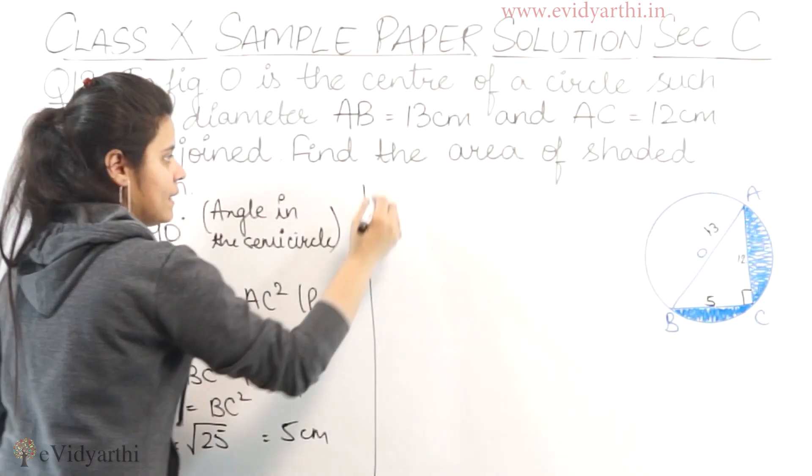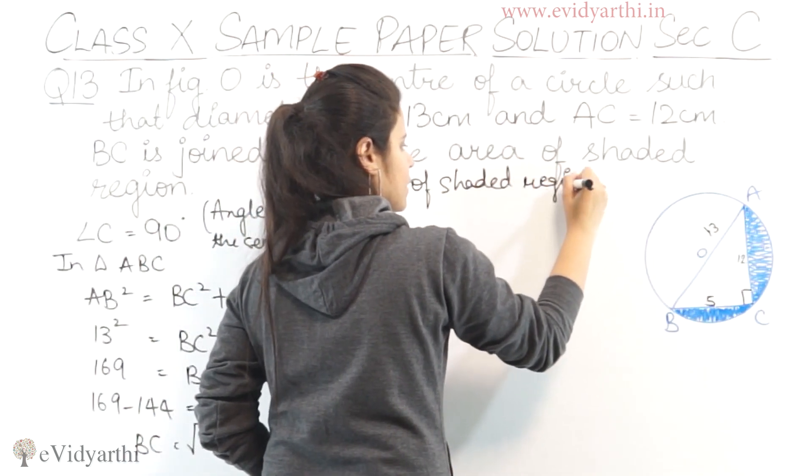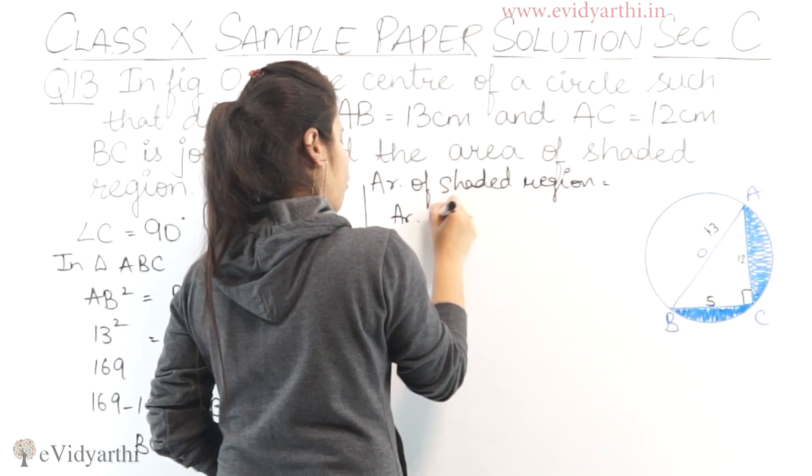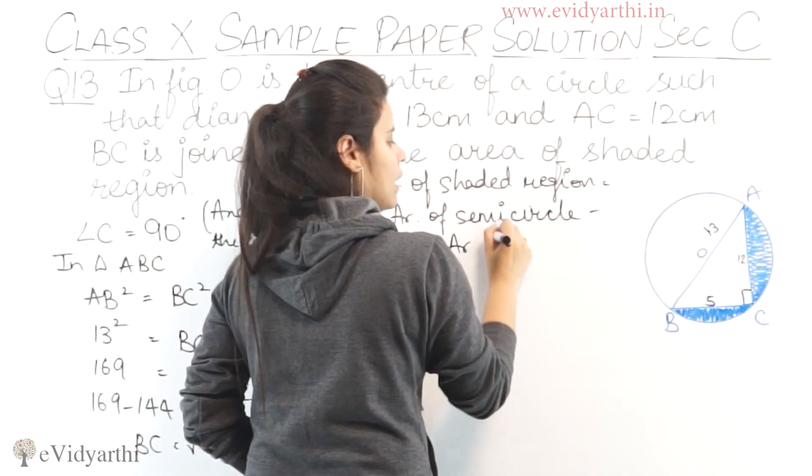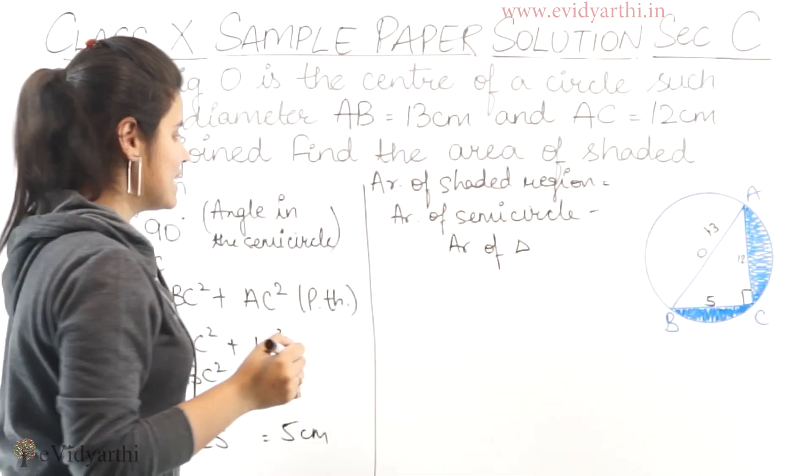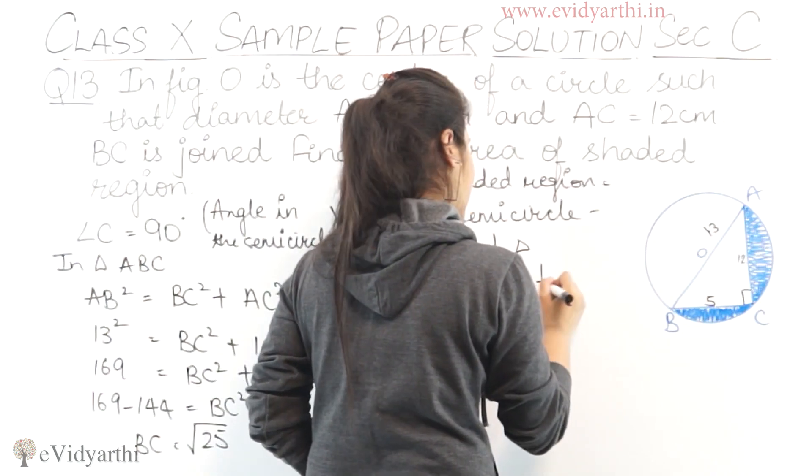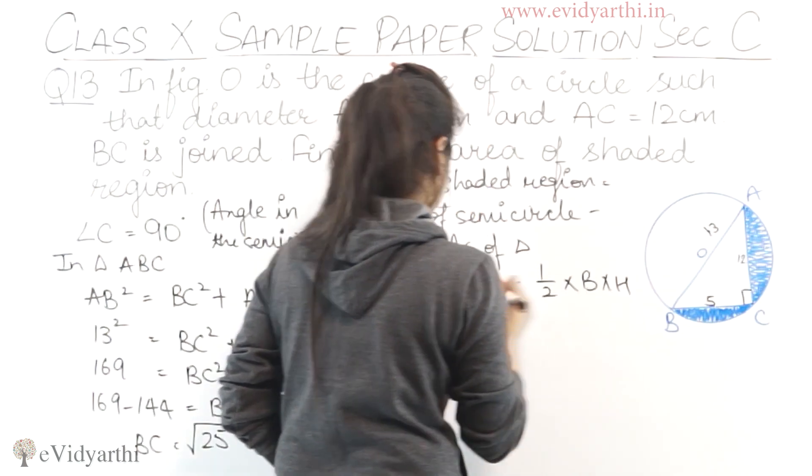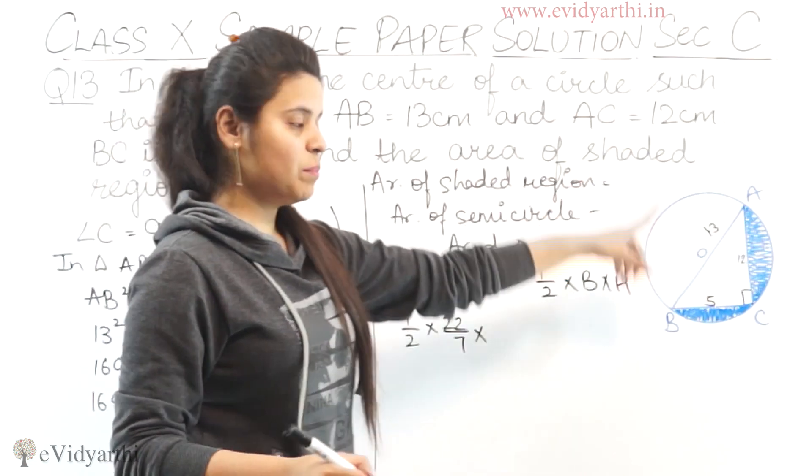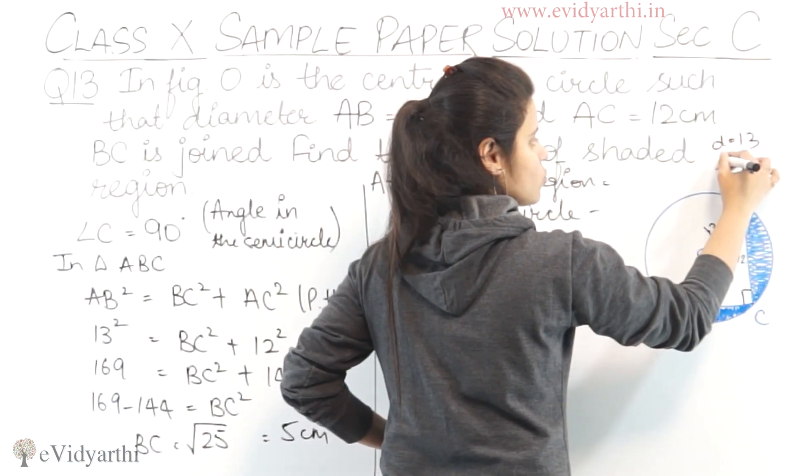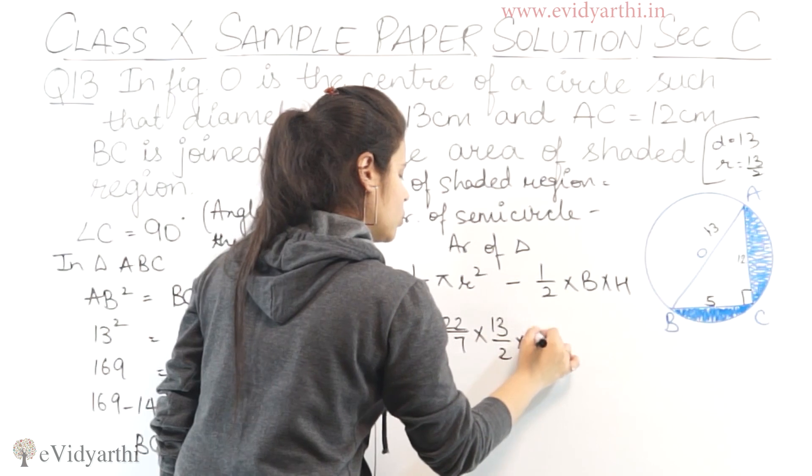Now for the area of the shaded region: area equals area of semicircle minus area of triangle. Area of semicircle is (1/2)πr², and area of triangle is (1/2) × base × height.